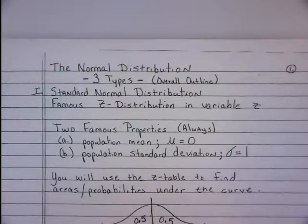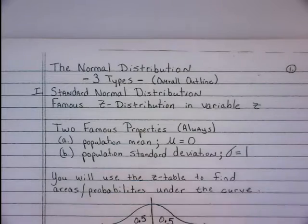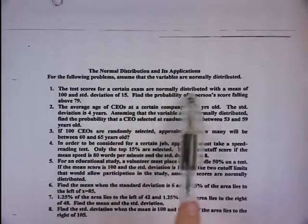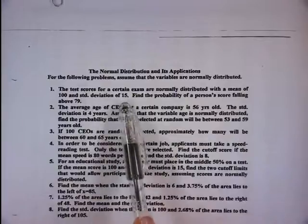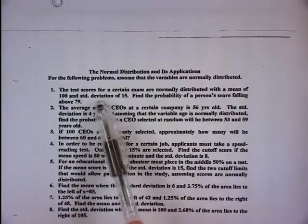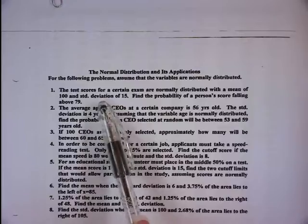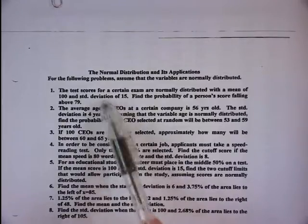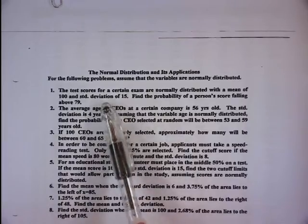Before we begin, I want to say something. The goal of this chapter is to answer the following type of question. We're not ready for this question at this moment, but we will be. For example: the test scores for a certain exam are normally distributed with a mean of 100 and a standard deviation of 15 — find the probability of a person's score falling above 79. We have to know the basics before we can answer questions like this, so let's do that now.